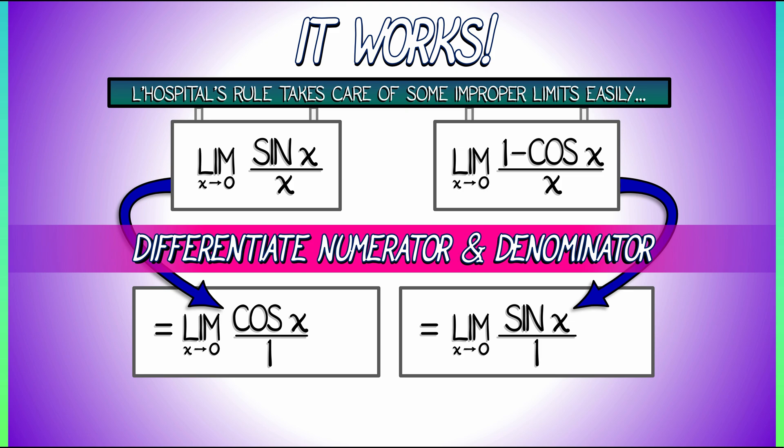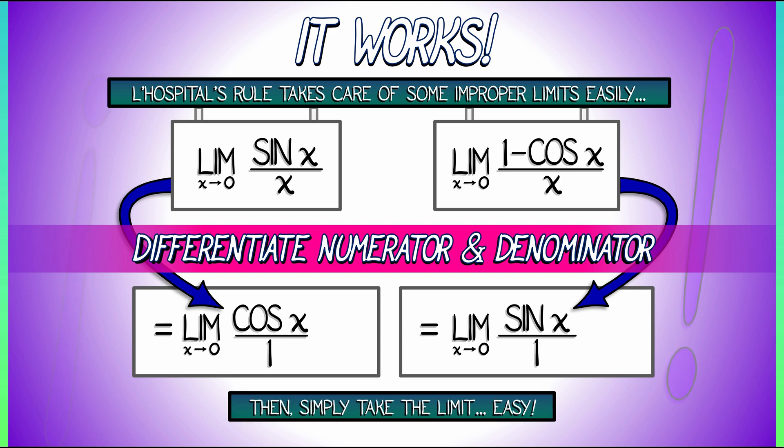Now, what you do is you simply take the limit. So, if you want to know what the limit as x goes to zero of sine x over x is, it's the same as the limit of cosine of x over one that evaluates to one. Or the limit as x goes to zero of one minus cosine of x over x. That's the same as the limit as x goes to zero of sine x over one. That is zero. That's really nice. That's one way to see why these two improper limits have the answers they have.